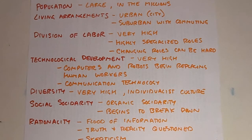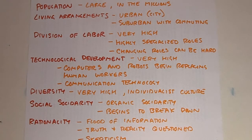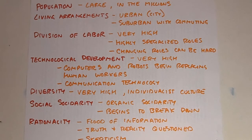Rationality — the way people view the world. There is so much information in a postmodern society that the very ideas of truth and reality become questioned. People can't agree on virtues, values, and ideas, and so an almost extreme skepticism develops. Whereas in a modern society, science is generally trusted and rational approaches to thinking are valued, postmodern societies have so much information and the culture is so shattered that even knowledge is sometimes not agreed upon.